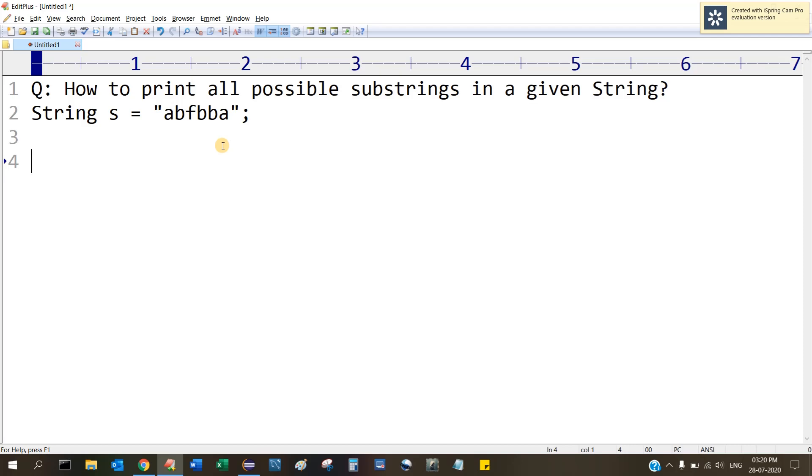You need to have two for loops. The outer loop is i, and you need to initialize this with zero. The inner for loop is j, which is i plus one.